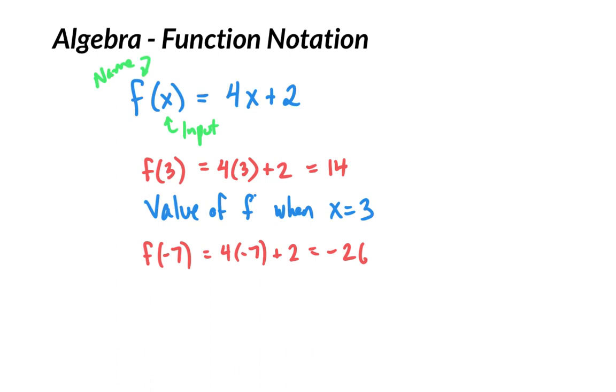So that's the basics of function notation. Now, a different way we can write this is we can write F of X is equal to 26. Well, now we don't know X. We're saying what is X when the function's value is 26? So now, rather than plugging in something for X, instead we say, well, I know my function is 4X plus 2. What X would I plug in to get 26? Well, subtract 2 from both sides, divide by 4, X is equal to 6. So you've got to be careful here kind of where that number is.